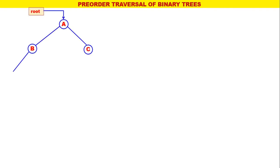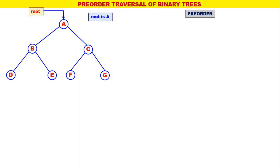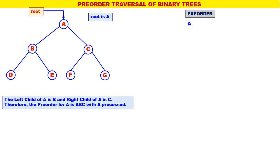Let us consider one more tree. We will find out the pre-order traversal for this tree. Root is a — we write down root a. The left child of a is b and the right child of a is c, therefore the pre-order for a is a, b, c with a processed. a is replaced by a, b, c with a processed.